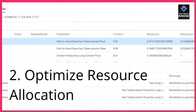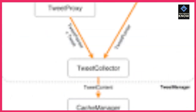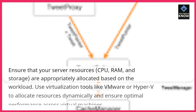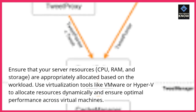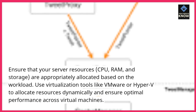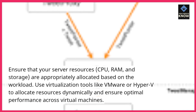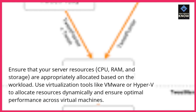2. Optimize resource allocation. Ensure that your server resources are appropriately allocated based on the workload. Use virtualization tools like VMware or Hyper-V to allocate resources dynamically and ensure optimal performance across virtual machines.